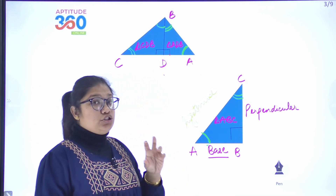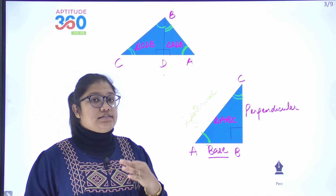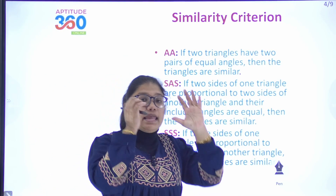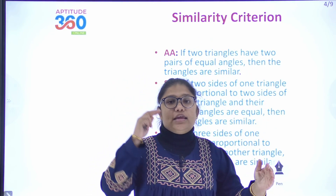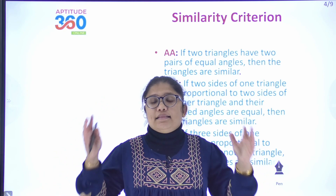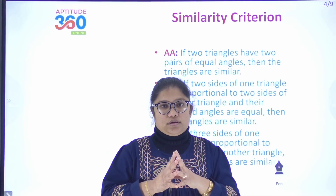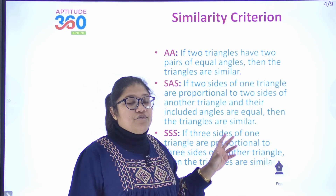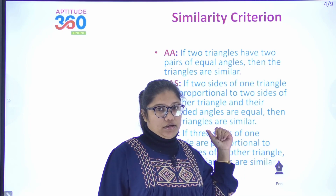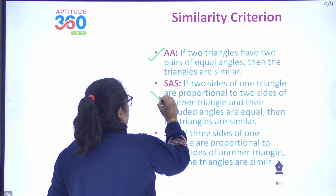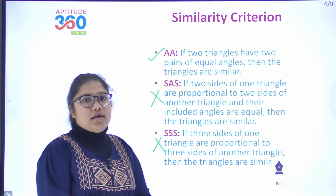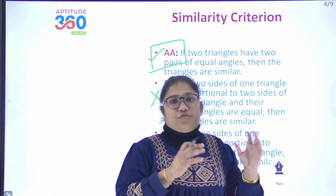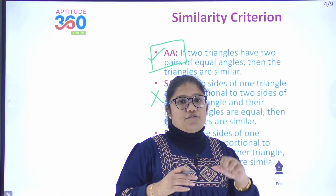We need to know the three criteria used to prove triangles similar. The first criterion is Angle-Angle (AA): if two angles of one triangle are equal to two angles of another triangle, those two triangles are similar. Since we have no information about the sides in this case, we will use the AA criterion to establish similarity between our three triangles.